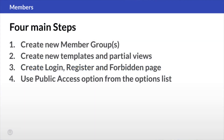There are only four main steps that we need to follow to set up role-based protection. The very first thing we need to do is to create a new Member Group. After that, we'll create new templates and partial views. The third step is all about creating a login, register and forbidden page. And finally, we'll use the public access option from the option list.